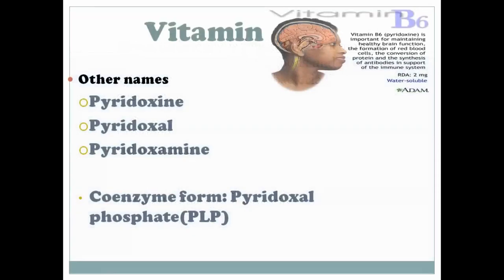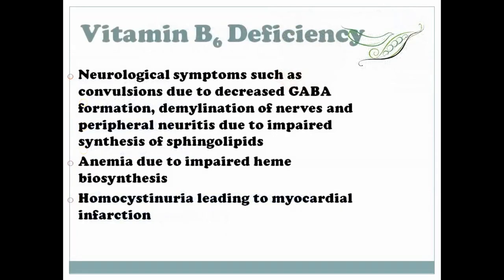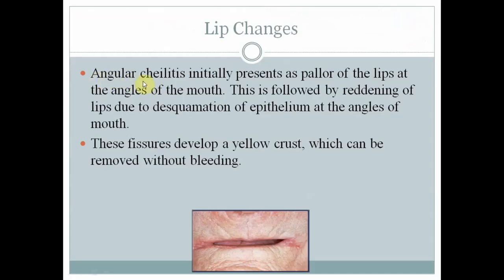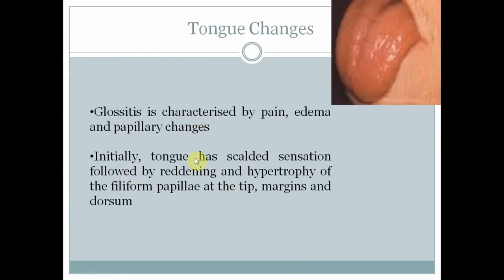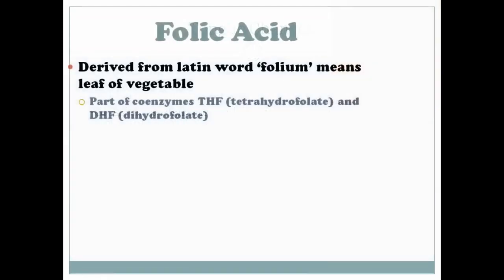Vitamin B6, pyridoxine — lip changes are the most common dental manifestation, presenting as angular cheilitis, initially as pallor at the lip angle, followed by reddening due to disformation of epithelia at the angles. Fissures develop a yellow crust that can be removed without bleeding. Tongue changes include glossitis with pain, edema and papillary changes — a scaled sensation followed by tethering and hypertrophy of filiform papillae, with tip and lateral margins involved.